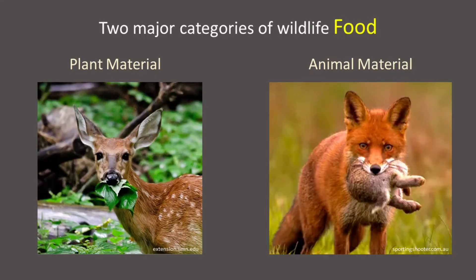Wildlife food can be grouped into two major categories. Foods are either plant material — foods derived directly from plants — or they are animal material, foods that are other animals.